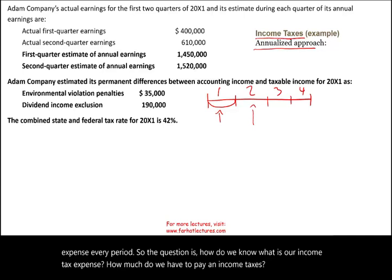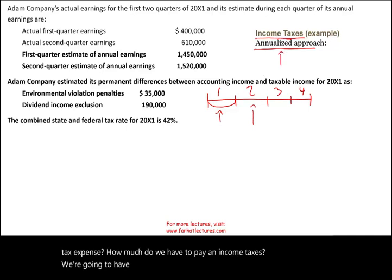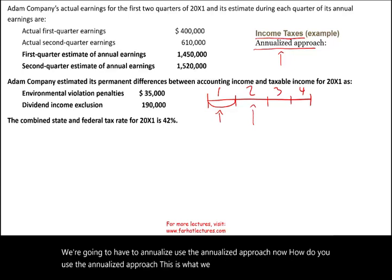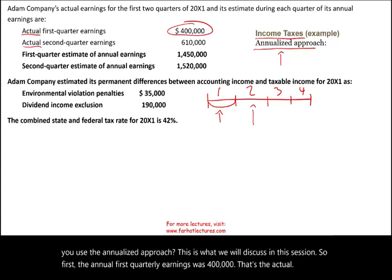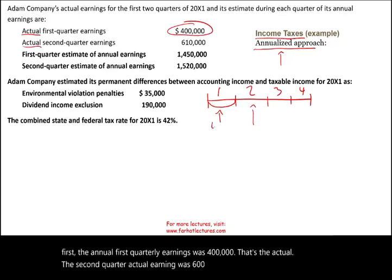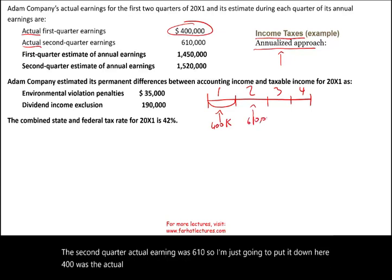We're going to have to use the annualized approach. Now how do you use the annualized approach? This is what we will discuss in this session. The first quarter earnings were four hundred thousand — that's the actual. The second quarter actual earning was six hundred and ten thousand.